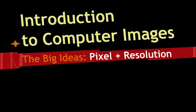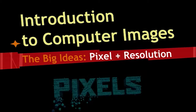The big ideas are pixel and resolution. Every single talk like this, I'm always going to try to have two big ideas. Those are going to be your computer science terms, your vocab, that you really want to remember when you come out of this class. So on to our first one: pixel.